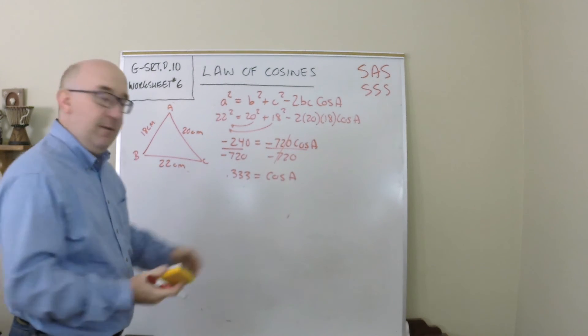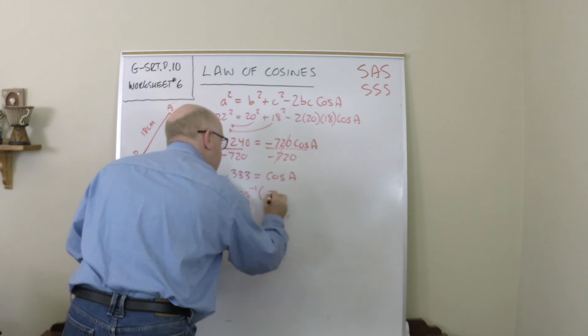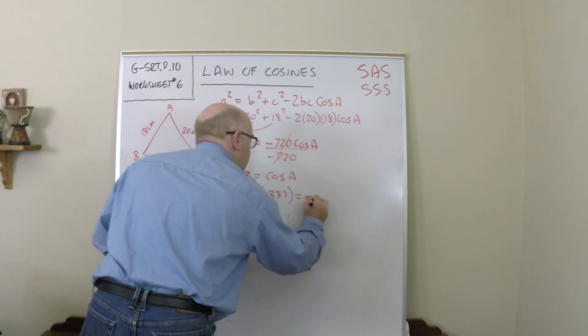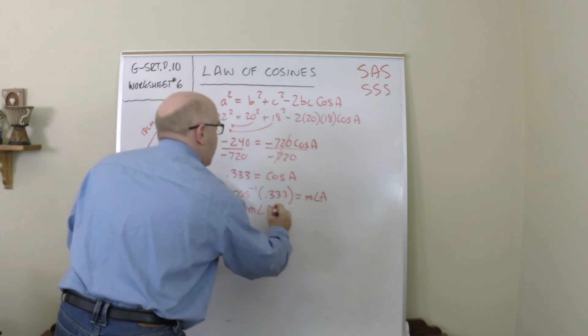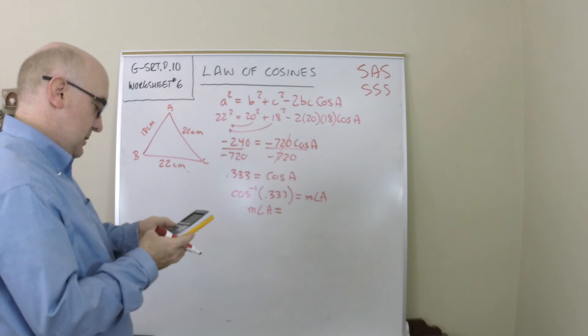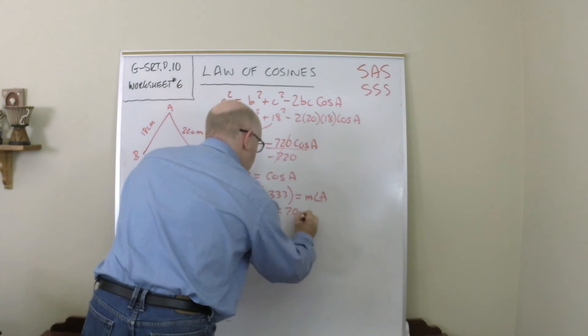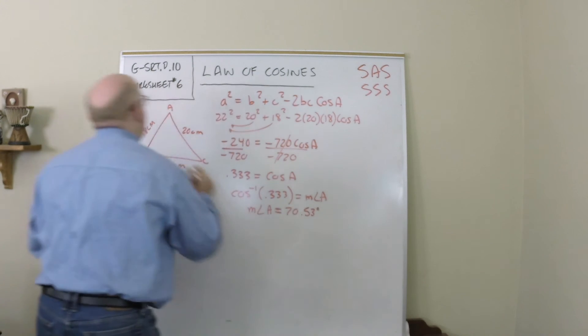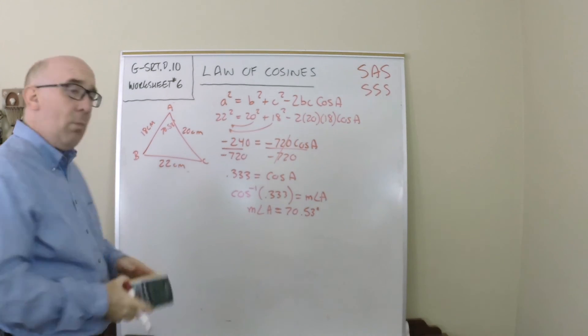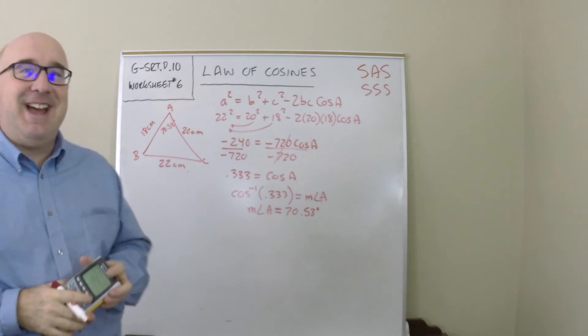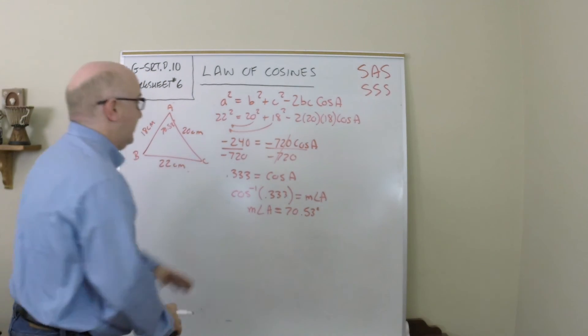This will now allow me to find that angle, so I do the inverse of that value gives me the measure of A, and my first angle that I get is approximately 70.53, so this is a 70.53 degree angle.